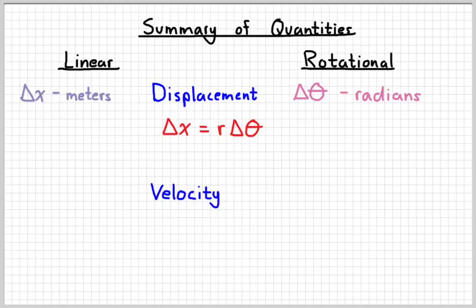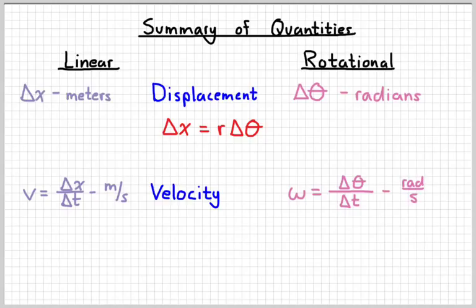The other important quantity is velocity, which is delta x over delta t if we're talking linear. It's measured in meters per second. It's delta theta over delta t if we're talking rotational motion. And it is given in the units radians per second. And that symbol for it is the Greek letter omega. And again, multiply omega by r to get the velocity.